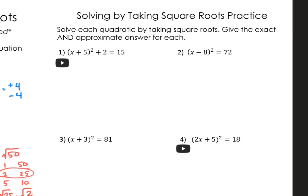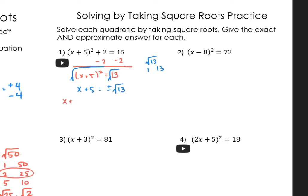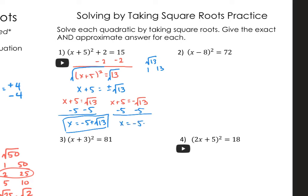Now going over practice problem 1. First, isolate the binomial squared by subtracting 2, so I have x plus 5 squared equals 13. Now take the square root of both sides. Square root of 13 can't be simplified since its only factors are 1 and 13, so we have plus or minus the square root of 13. Breaking into 2: x plus 5 equals positive square root of 13, and x plus 5 equals negative square root of 13. Subtract 5 — these aren't like terms — giving x equals negative 5 plus square root of 13, and x equals negative 5 minus square root of 13.